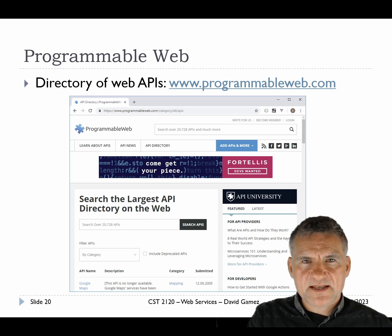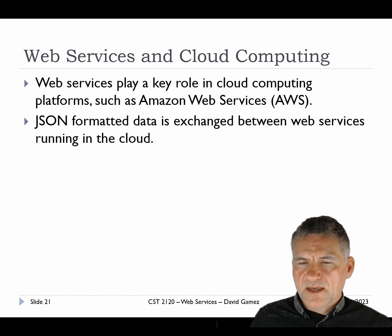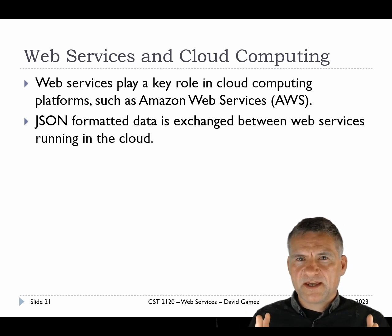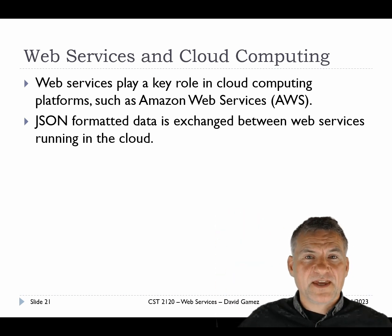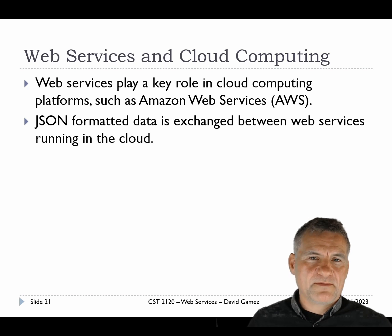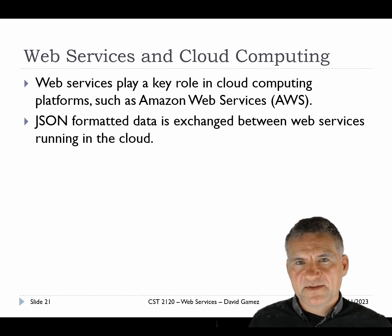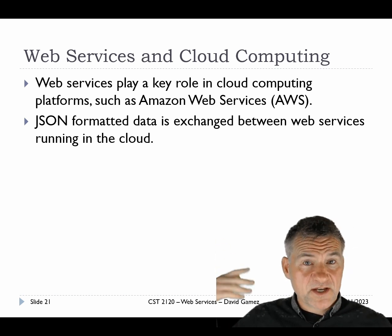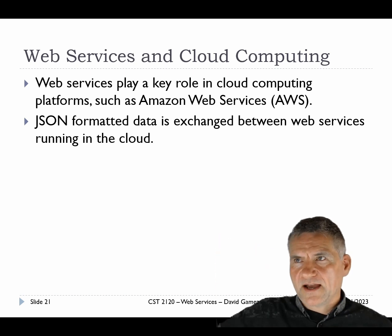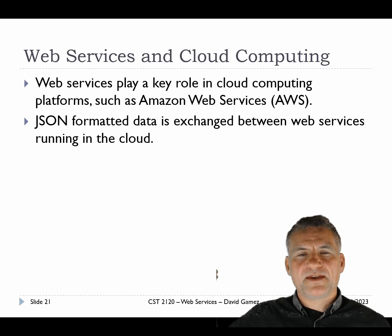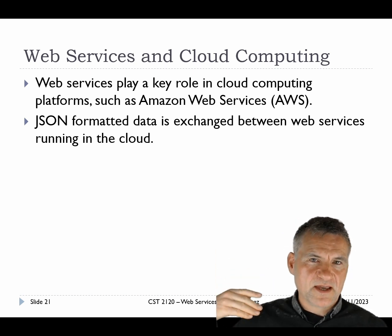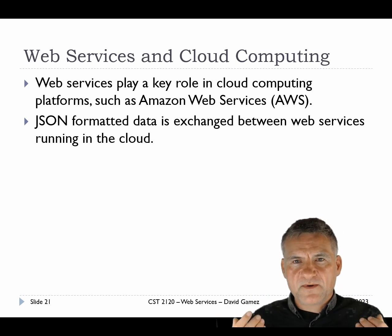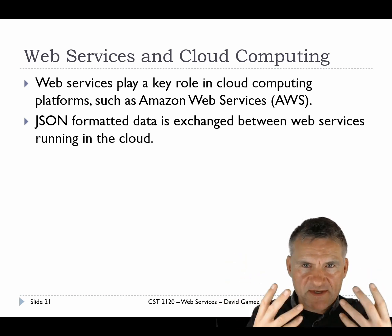Within cloud computing, web services play a pivotal role. Amazon Web Services, which I teach in the third year, is basically a series of different web services that each do different things. Building a cloud web app means stitching together these different web services. For example, DynamoDB as a database in the cloud — you call it with JSON to store or retrieve data. There'll be another web service to analyze the emotional tone of text, whether people are saying good or bad things, and others for converting images into text. A big cloud application will be talking to these different web services to use their different functionality.